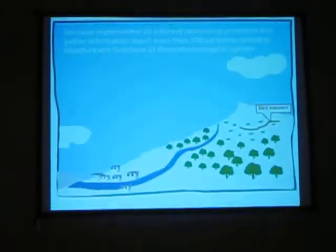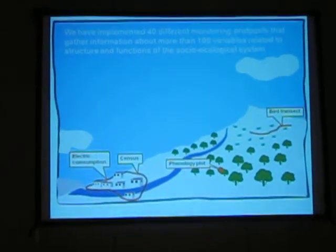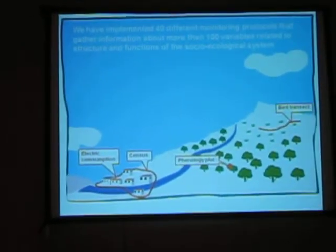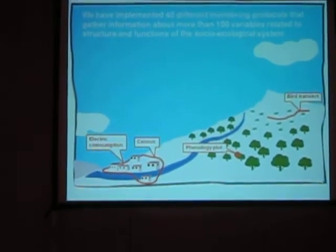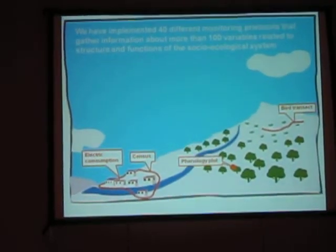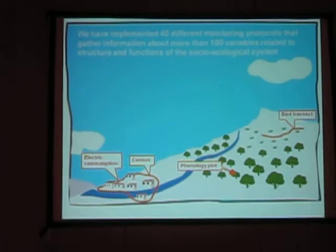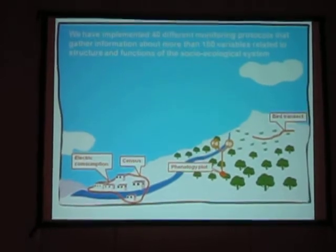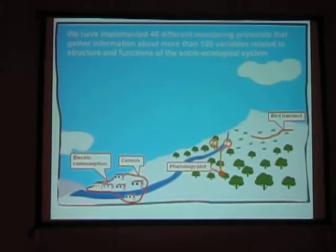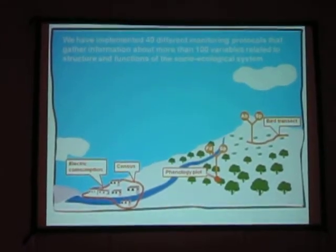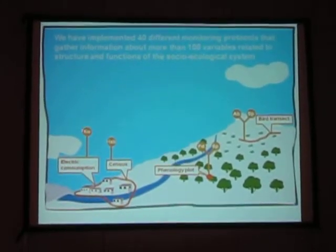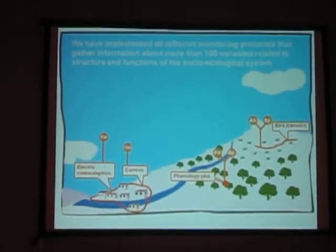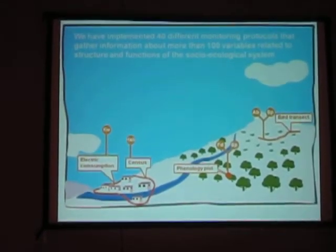Thanks to this monitoring program, we have more than 40 monitoring protocols that are collecting relevant information about the structure and the function of our ecological and socio-economical system. These protocols collect more than 100 environmental variables. For example, we have bird transects, phenology plots, and information from the urban landscape showing electric consumption or demographic variables.